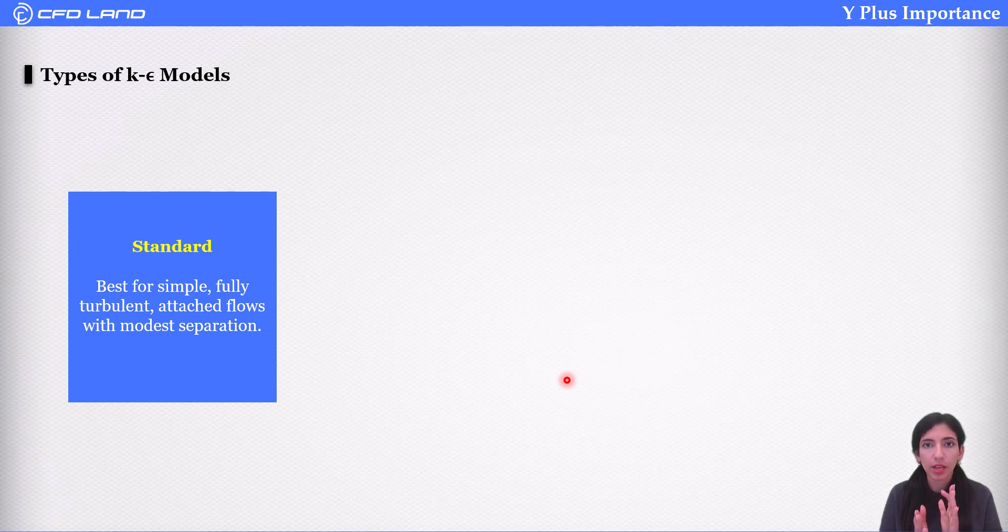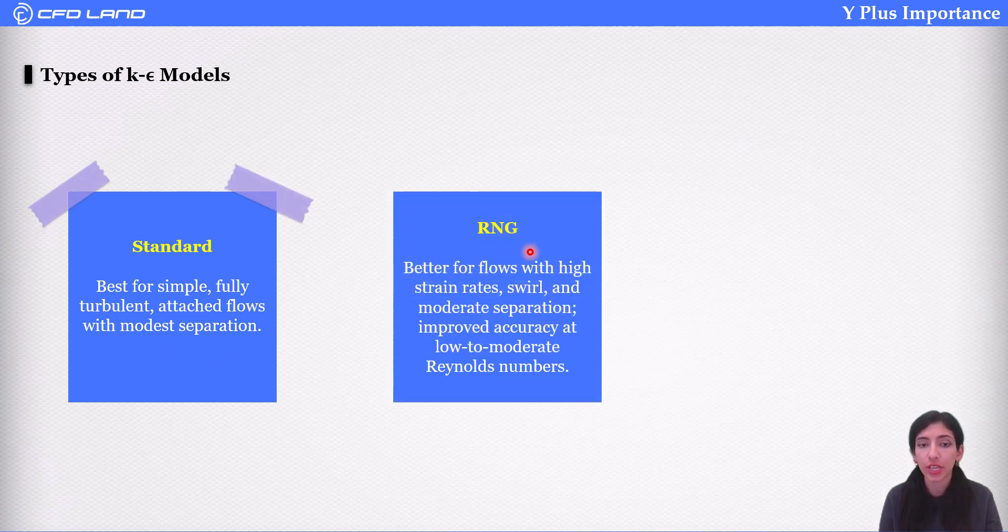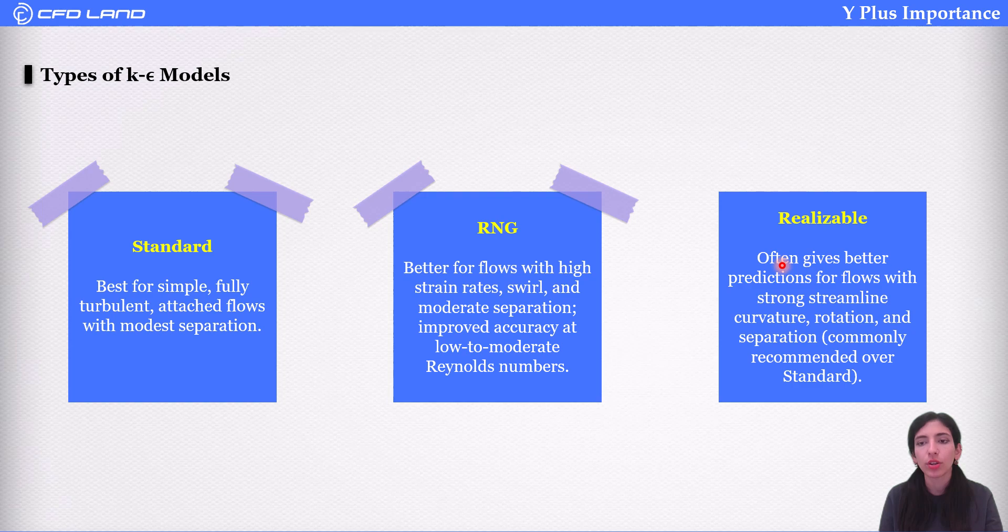There are three types of k-epsilon models. The most famous one is standard k-epsilon, best for simple, fully turbulent, attached flows with modest separations. Then we have RNG, better for flows with high strain rates, swirl, and moderate separations. Improved accuracy at low to moderate Reynolds number. And realizable, often gives better prediction for flows with strong streamline curvature, rotation, and separation.